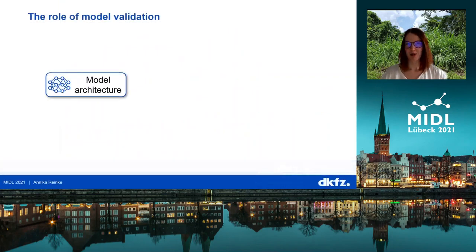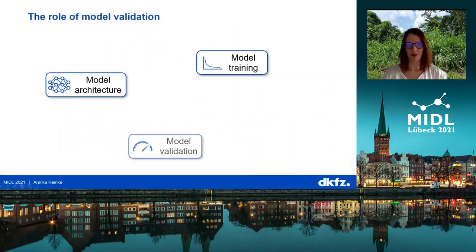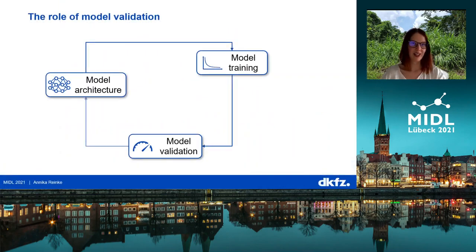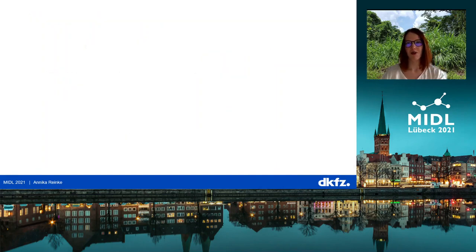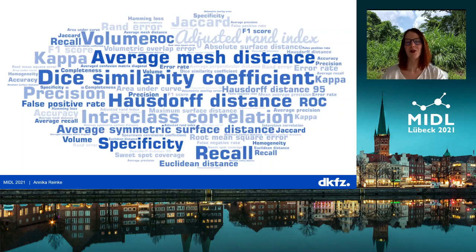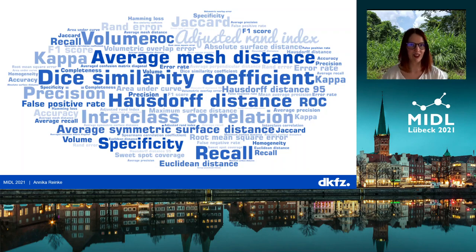When developing your algorithm, the model architecture, training and validation go hand in hand. And for the validation step, you have to choose your performance measures from a huge pool of metrics. This is definitely not straightforward because every metric has several strengths but also weaknesses.